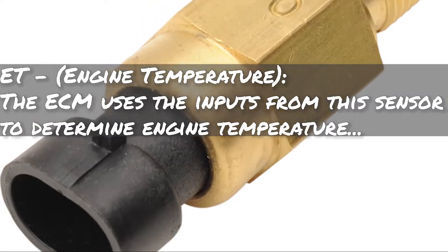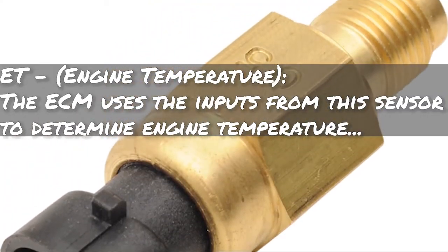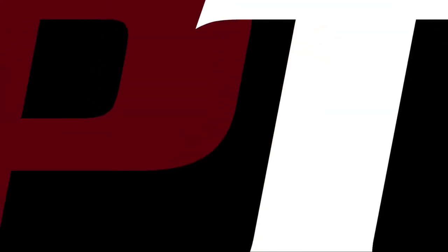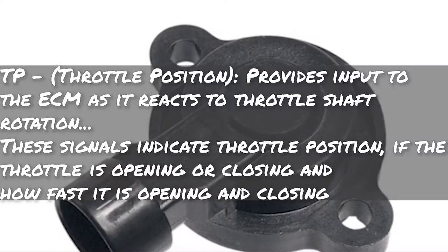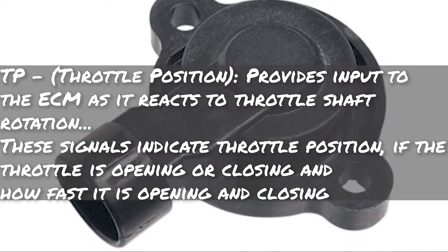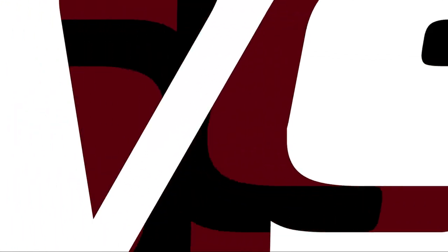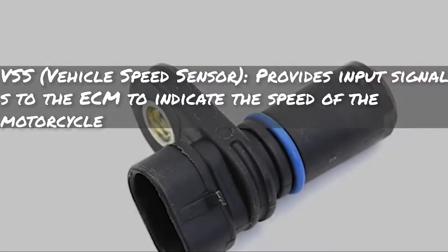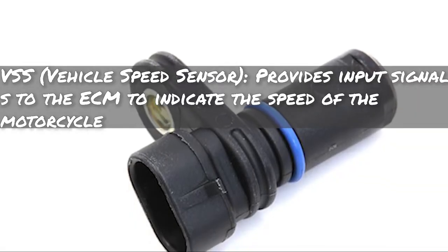Fourth is engine temperature. The ECM uses the input from this sensor to determine engine temperature because that's going to have a pretty big effect on timing. Fifth is TP — throttle position. This provides input to the ECM as it reacts to throttle shaft rotation. These signals indicate throttle position, whether the throttle is opening or closing, and how fast it is opening and closing — so it knows if you're really getting on it versus rolling on it.